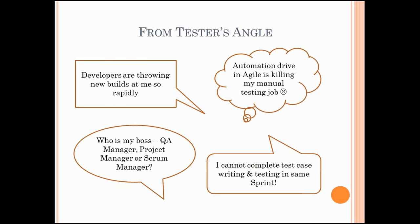Another tricky thing for testing team members is suddenly having multiple managers. There's a conventional QA manager, but now they sit with the development team and that team has a scrum master driving daily stand-ups. So they ask: 'Who is my real boss? Who gives me directions? Do I go to my QA manager, project manager, or scrum master? Who is going to give me answers for my queries?'